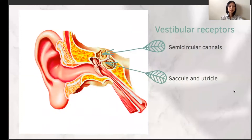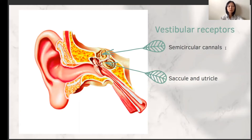The receptors for the vestibular inputs are in the inner ear. There are two types of receptors. The first type is found inside the saccule and the utricle. This receptor responds to the force of gravity and detects head movement as a result of change in pull of gravity upon the receptors. The second type is found in the semicircular canals. These canals are filled with fluid, and the movement of the fluid as a result of head movement stimulates the receptors. This input helps us detect the change in the speed or direction of movement. The combined input from both types of receptors is very precise and tells us exactly where we are in space and how we are moving.